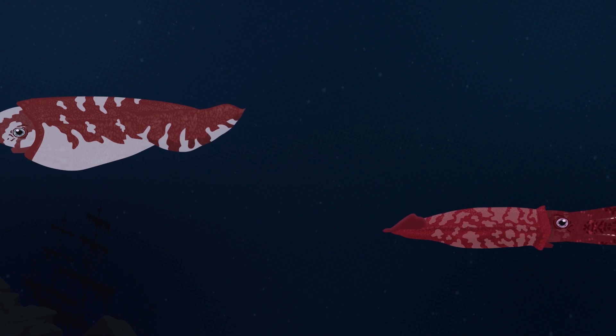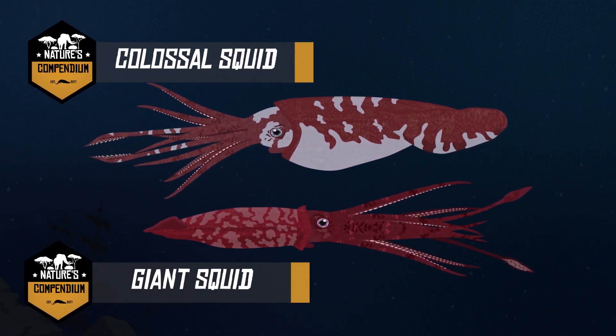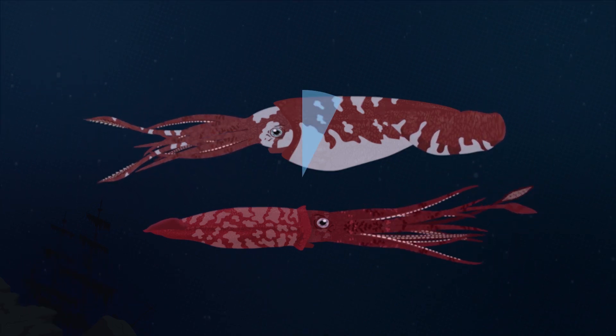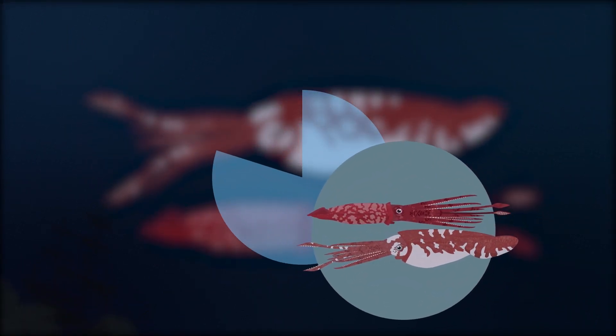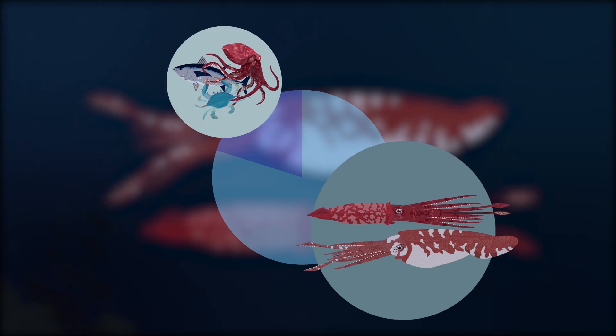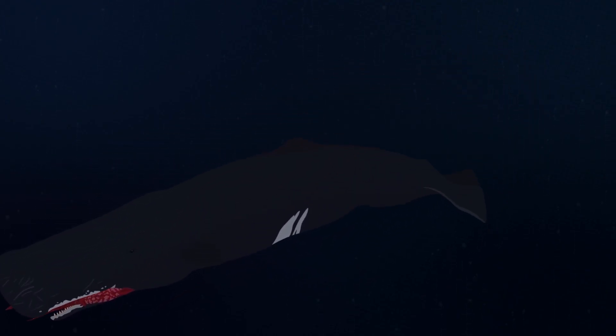Sperm whales dive so deep to hunt for their favorite prey items, the giant and colossal squid. These massive cephalopods, along with other squid species, make up 80% of the sperm whale's diet. The remaining 20% of their diets consist of octopi, crustaceans, and fish. While sperm whales can easily overpower the squid, these cephalopods don't go down without a fight.